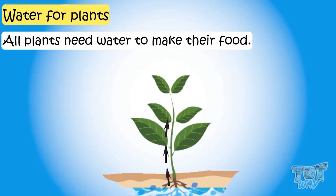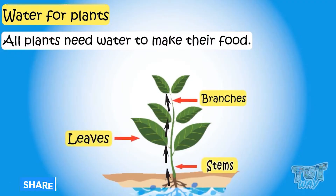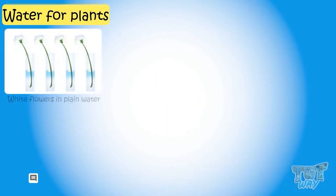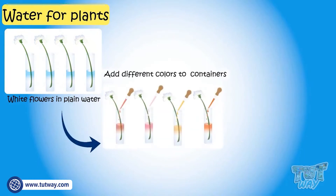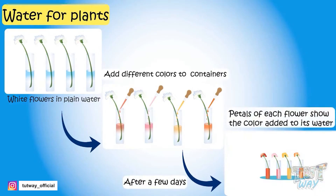Water travels through tiny tubes in the stem to the upper parts — that is, all the leaves, branches, and stems. Let's see this with an example. Here we had some white colored flowers and empty containers. We added some edible colors to water, then kept them for a few days. After a few days, the petals of each flower show the color added to its water.